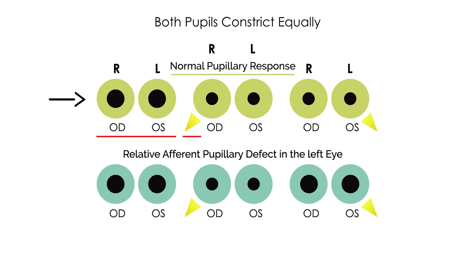What will happen is that both pupils will constrict equally. Then you do the same test, this time in the left eye — you shine the light into the left eye — and again, both pupils will constrict equally. That's the physical exam finding during an eye exam of a normal eye.